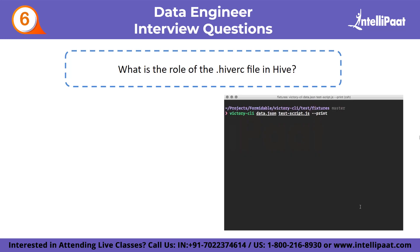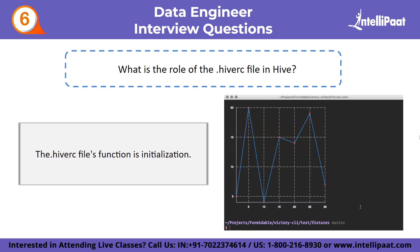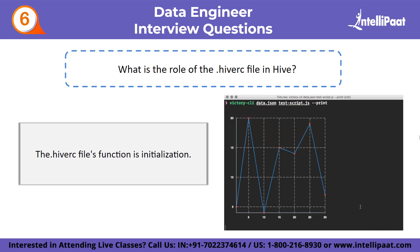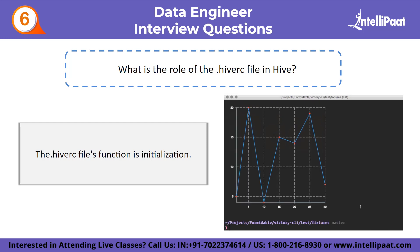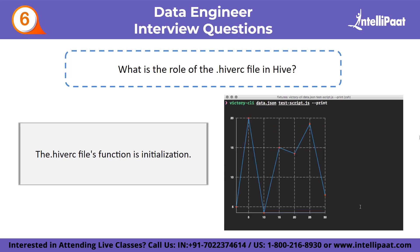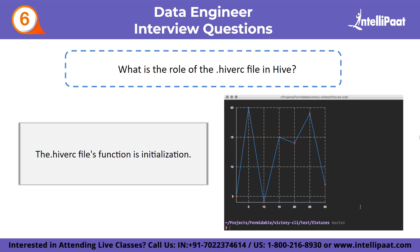Sixth question: what is the role of the .hive-rc file in Hive? The .hive-rc file function is initialization. When you want to write code for Hive, you should open the CLI — that is, the command line interface — and this file is the first one that is loaded. It contains the initial parameters that you set.